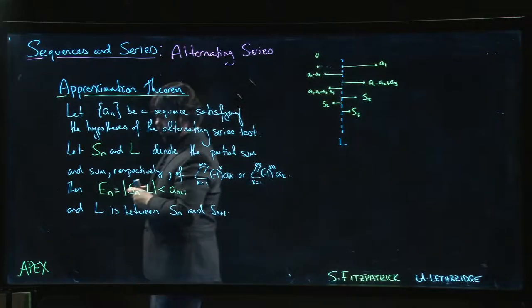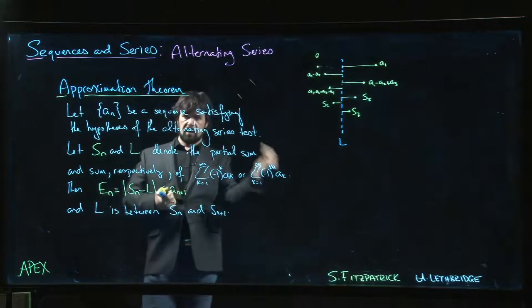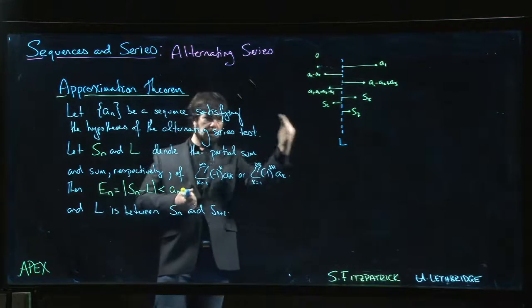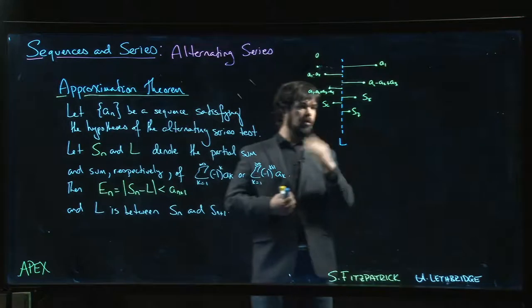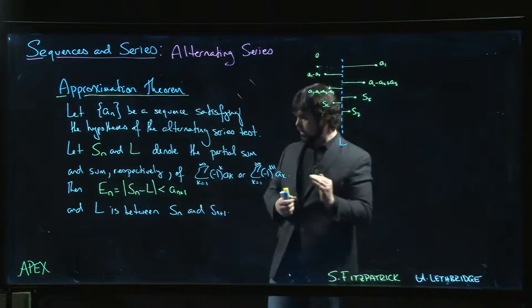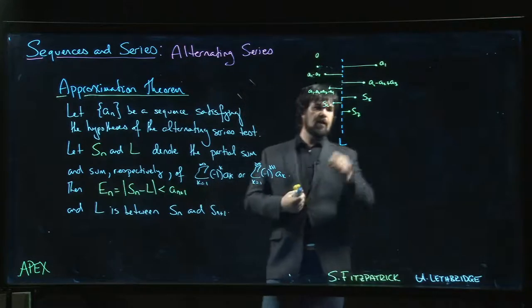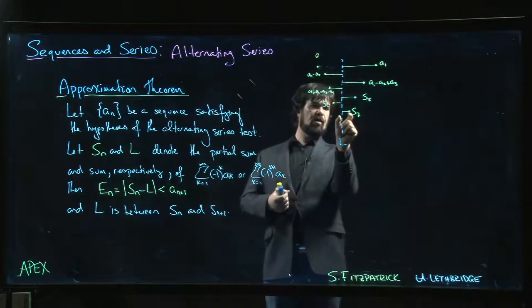You just jump back and forth over the limit every time. And so it's because of this jumping back and forth, you're never straying too far from it. It's not like you're trying to work your way up to the limit. You're jumping back and forth over the limit, and every time the jumps get smaller.